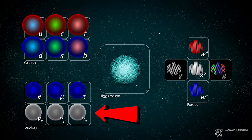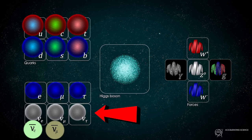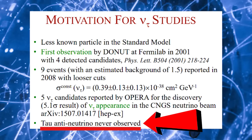The electron neutrino and the electron anti-neutrino. The muon neutrino and the muon anti-neutrino, and the Tau neutrino and the Tau anti-neutrino. It turns out that we have directly observed five of these six, but never the elusive Tau anti-neutrino.